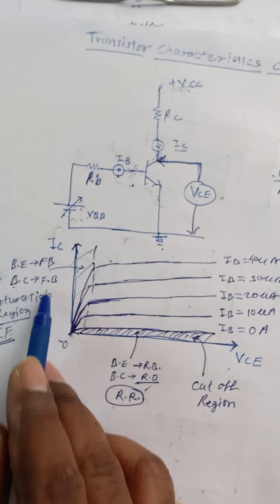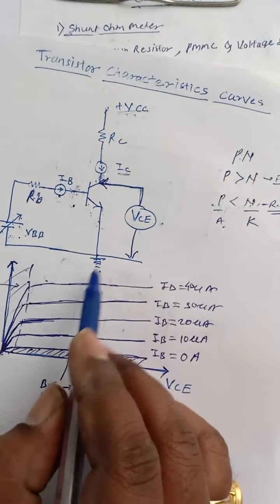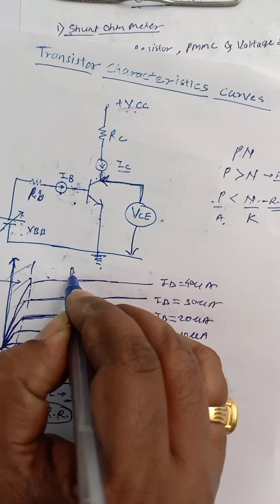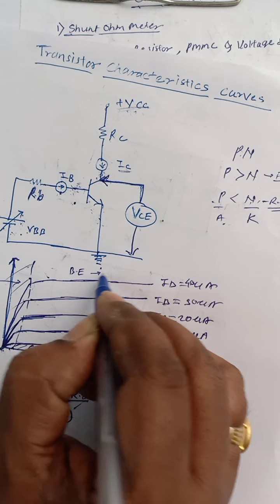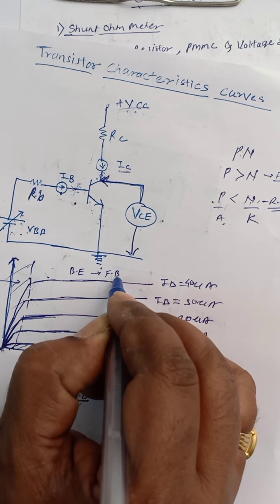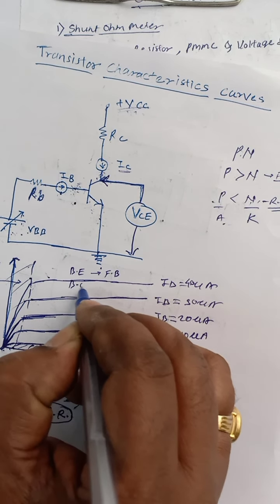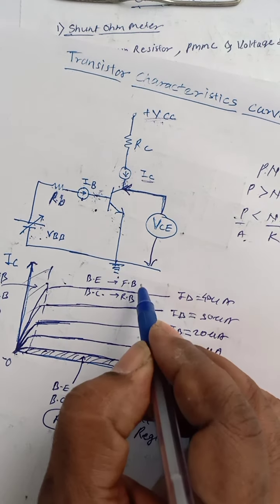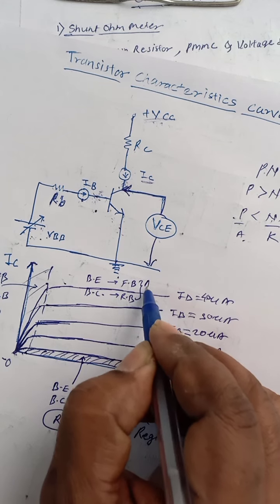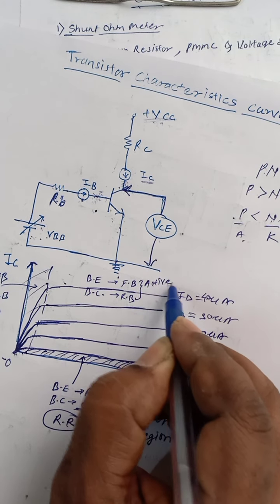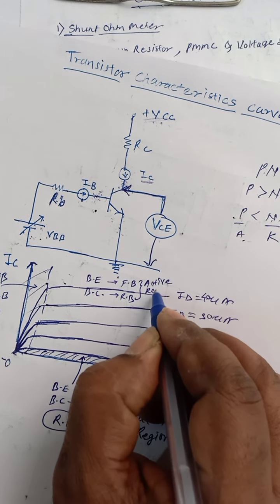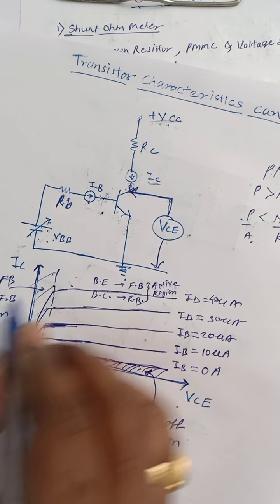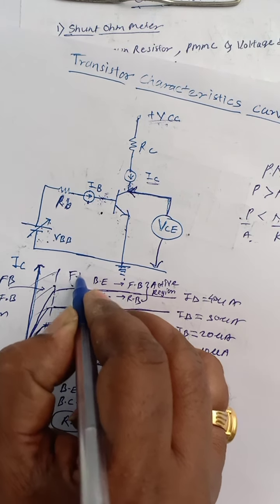In this region where base-to-emitter junction is forward biased and base-to-collector junction is reverse biased, this is known as the active region. This is the FR condition. So the active region corresponds to the FR condition of transistor biasing.